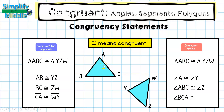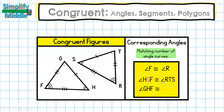For corresponding angles, we match the angle curves. The measure of angle F has three angle curves, so the measure of angle R also has three angle curves. Looking at angle HGF — I'm looking at angle G, which has one angle curve — angle T also has one angle curve, so just make sure T is in the middle. The last one, angle GHF, means angle H, which has two angle curves, matching angle S on the other triangle with S in the middle.